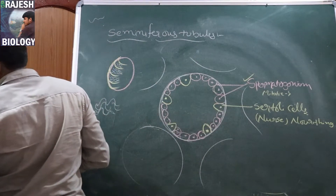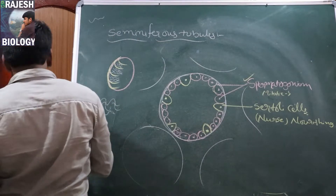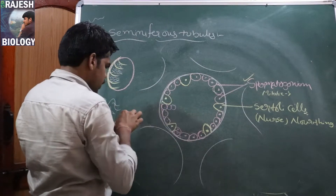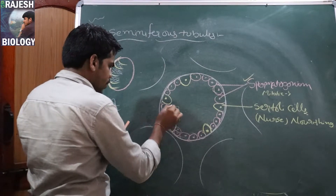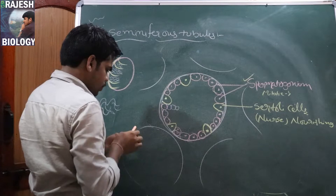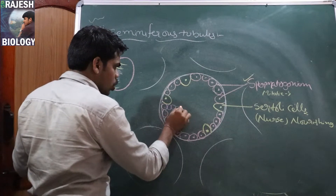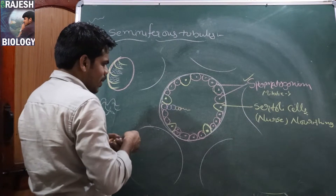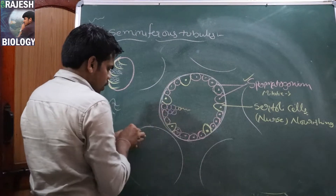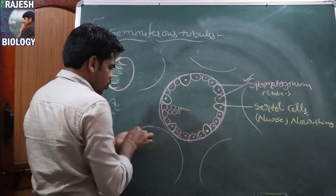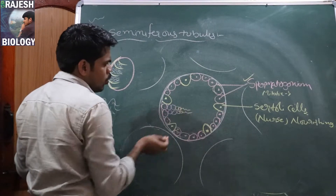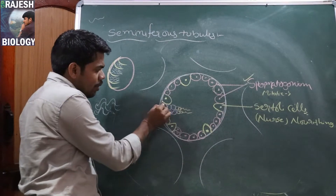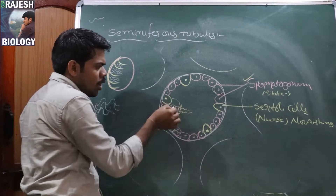I will draw the stages: primary spermatocyte, secondary spermatocyte, spermatid, and spermatozoa. So many stages are there in between. These nourishing cells give nourishment to the mother cells and to the sperm cells once they are formed.